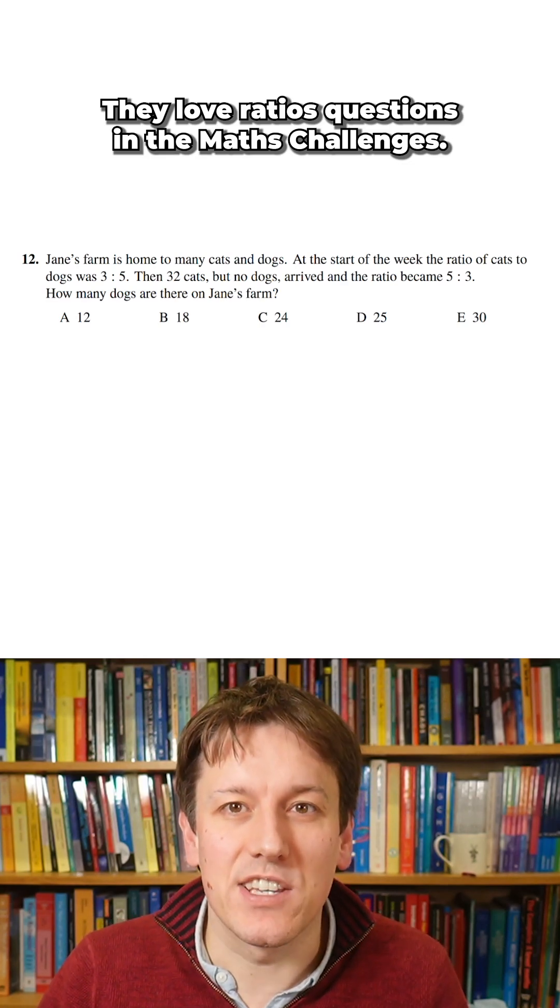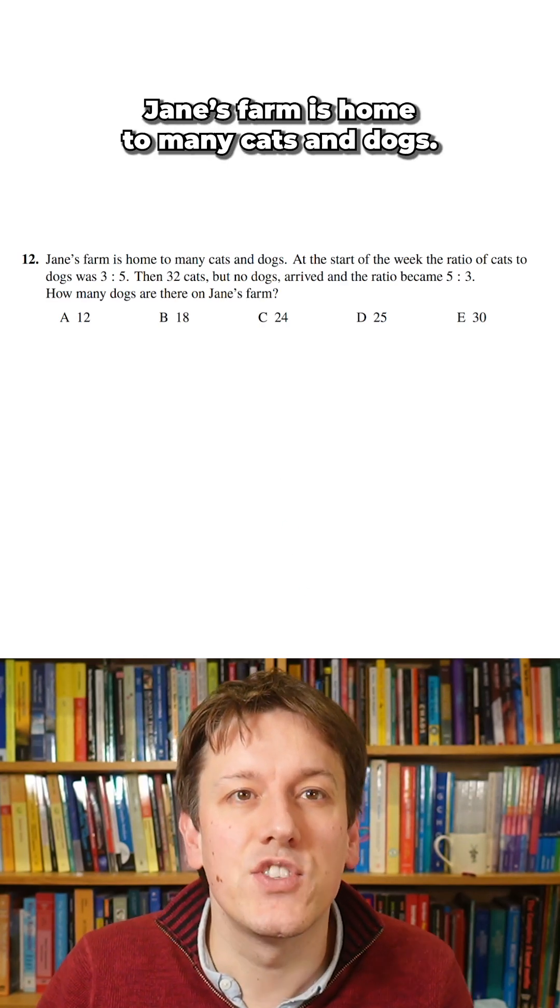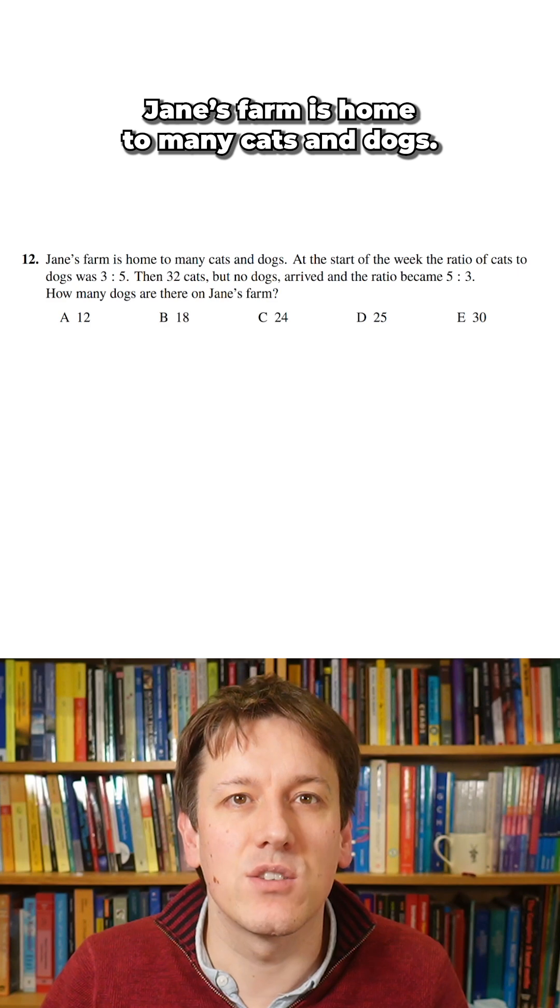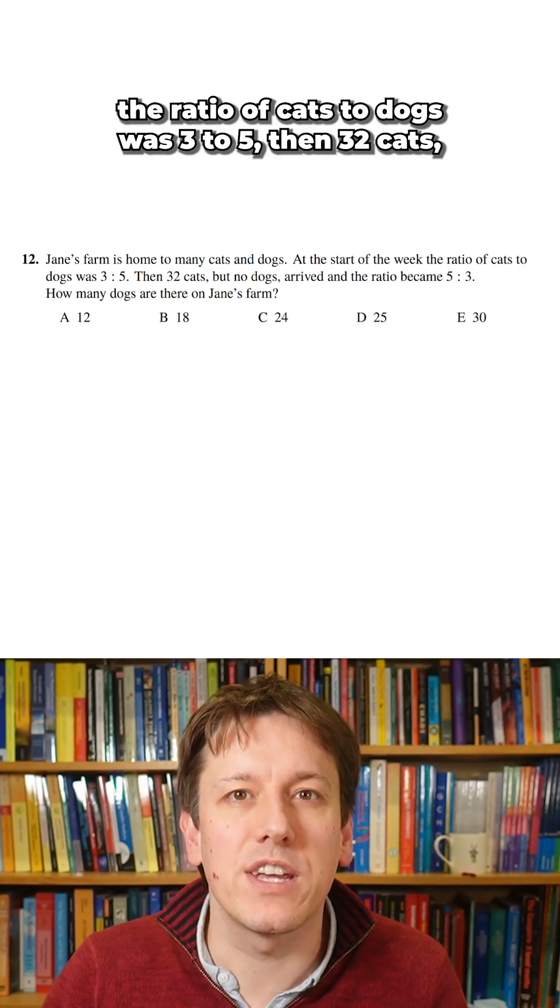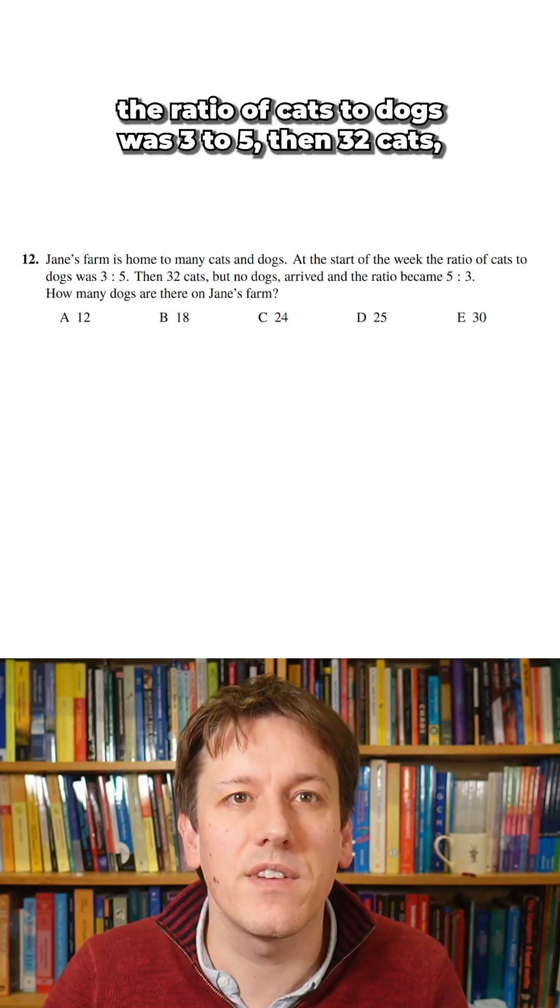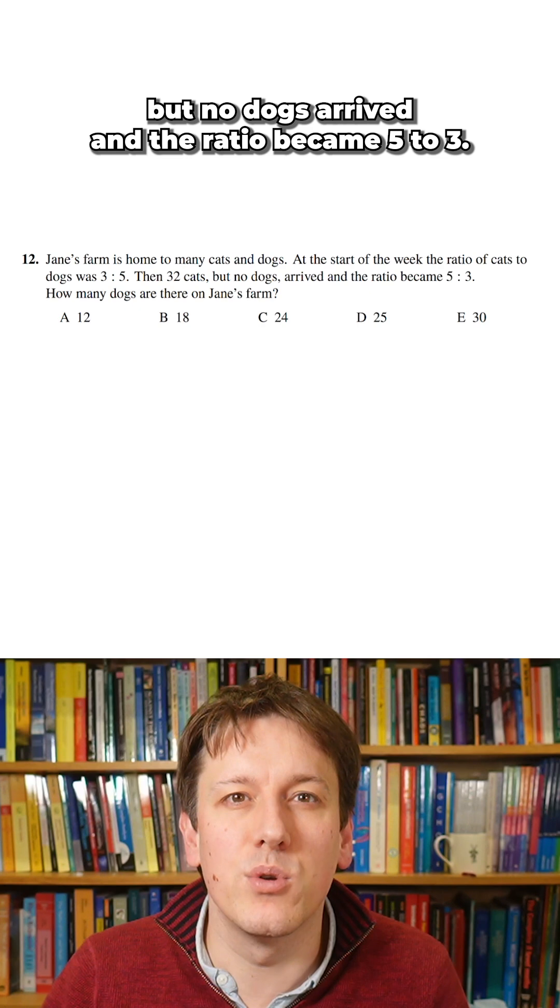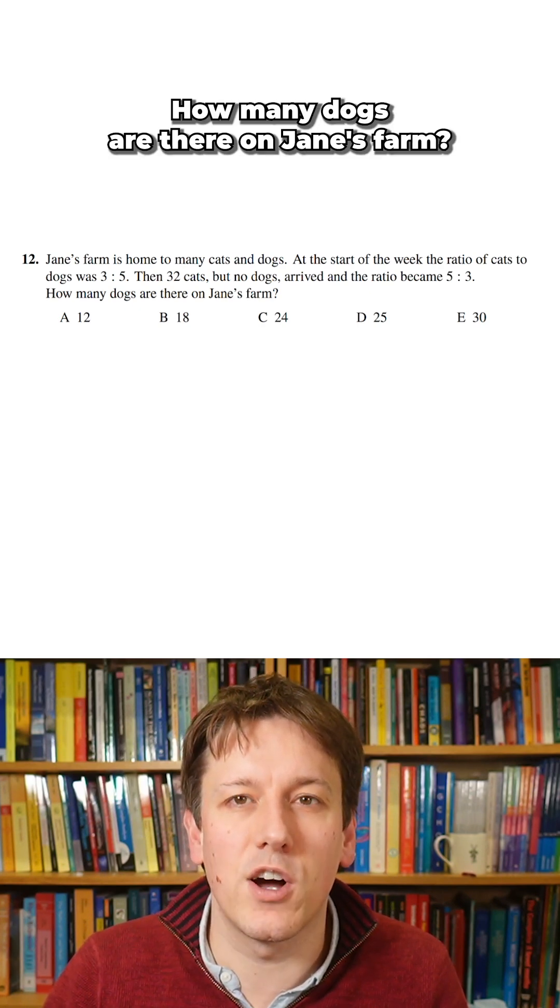They love ratio questions in the maths challenges and this is quite a classic one. Jane's Farm is home to many cats and dogs. At the start of the week the ratio of cats to dogs was three to five, then 32 cats but no dogs arrived and the ratio became five to three. How many dogs are there on Jane's Farm?